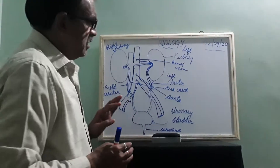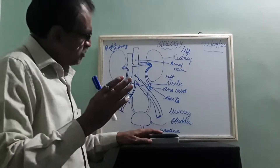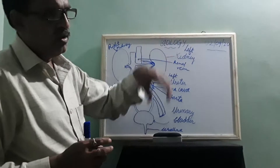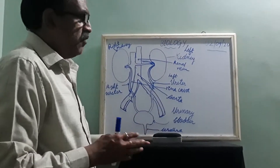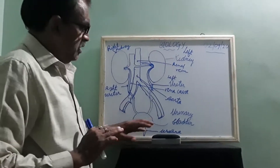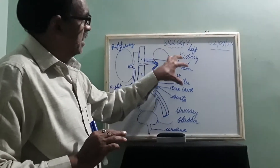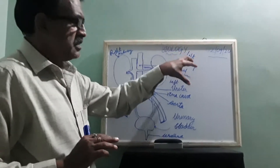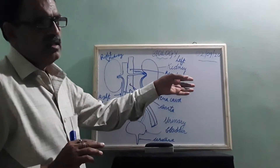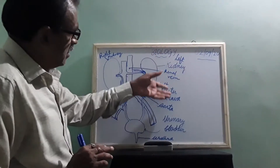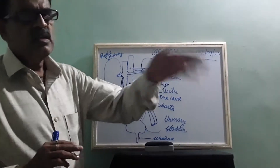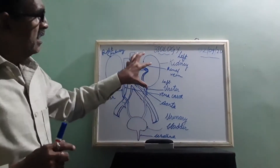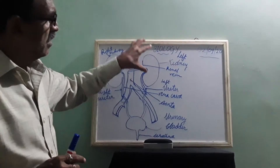But in highly developed organisms there are specialized organs whose work is to remove the nitrogenous waste generated in the body along with blood. So what is excretion? The process of removal of waste released in our body — the removal of that waste — is called excretion.